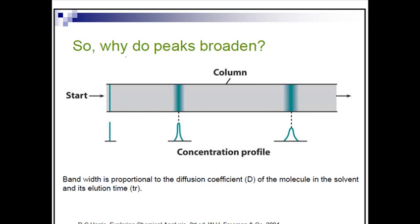Why do peaks broaden? Bandwidth is proportional to the diffusion coefficient KD. KD is composed of CS divided by CM, where CS is the concentration at the stationary phase. If the concentration of analyte molecules is higher in the stationary phase — meaning the analyte molecule has a tendency to attach with stationary phase molecules — then the diffusion coefficient KD gets higher. When KD gets higher, we get broad bands, and the bandwidth is increased.